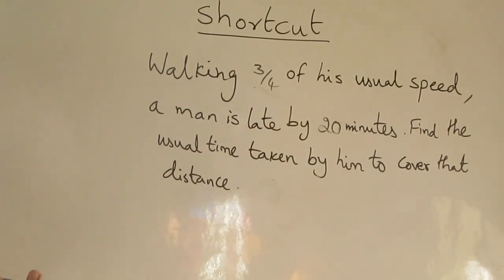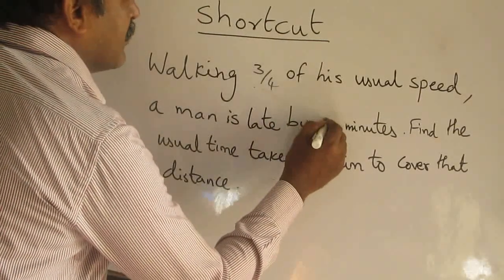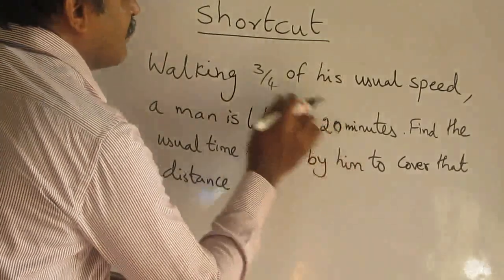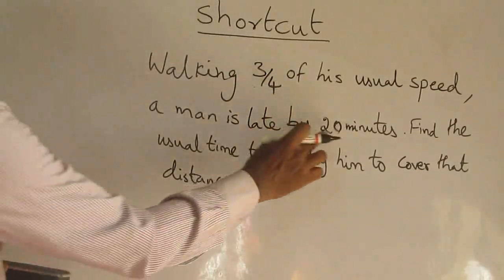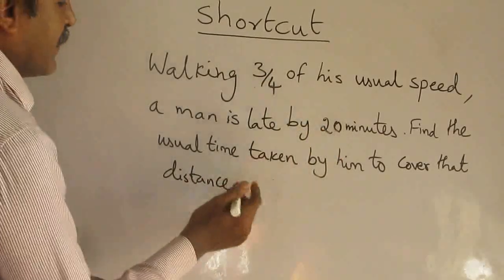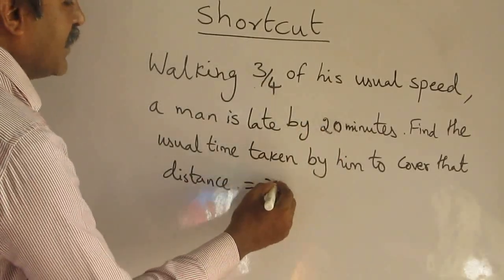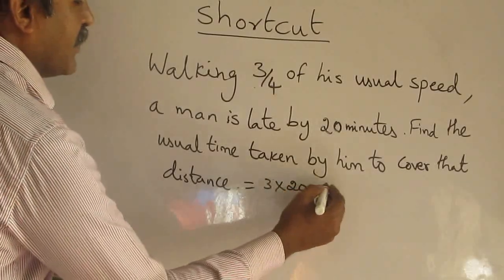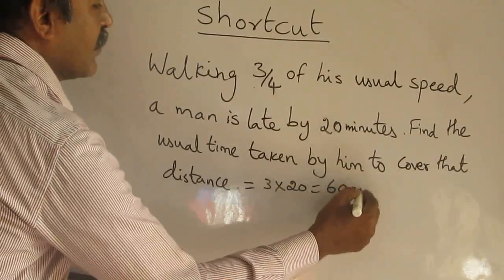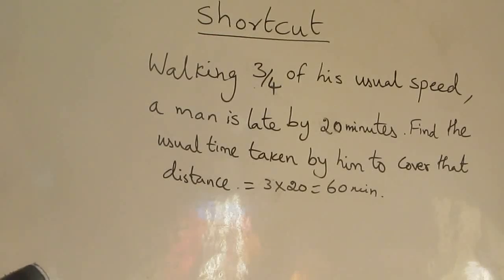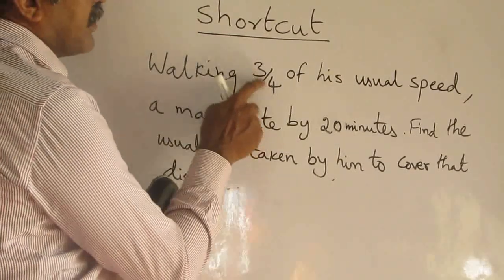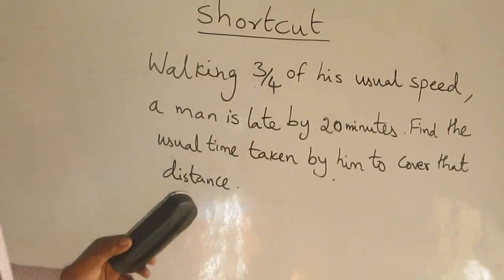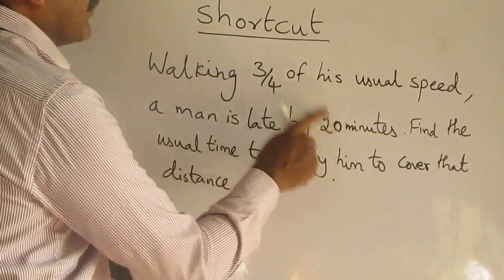Now, what you have to do is observe: 20 minutes late, speed is 3/4. The numerator is 3, the denominator is 4. So my answer is 3 times 20 = 60 minutes. But don't think this is always this simple. Here the difference between the numerator and denominator is 1 (4 minus 3 = 1). Wherever the difference between numerator and denominator is 1, you can directly multiply the numerator by the minutes late.